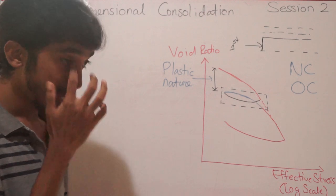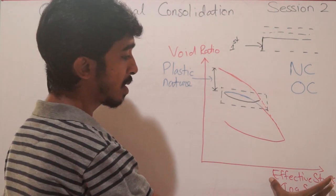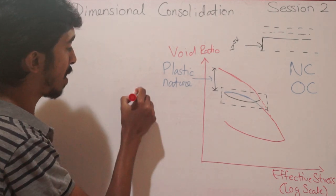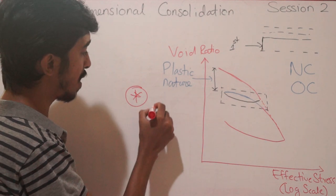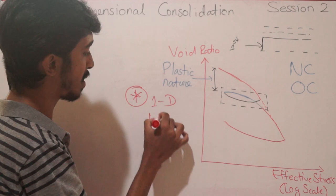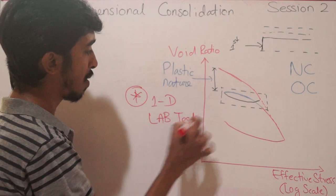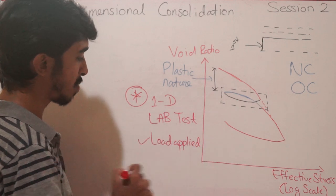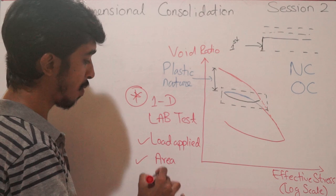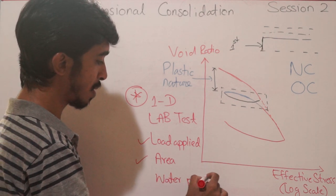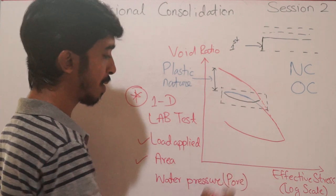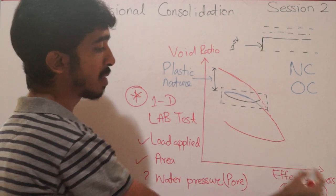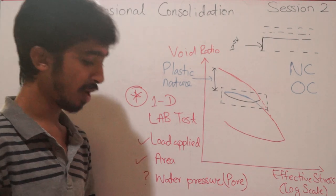We are drawing the graph for effective stress rather than total stress. In a one-dimensional lab test, we know the load applied and the area of the sample, but we don't know the pore water pressure. So there's a reason why we directly use effective stress here, which we will explain now.